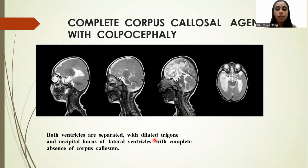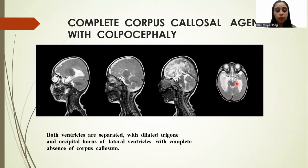Complete corpus callosum agenesis with colpocephaly. These are the sagittal T2-weighted and axial T2-weighted images in which we can see that both ventricles are separated, with dilated trigone and occipital horn of the lateral ventricle, with complete absence of the corpus callosum.